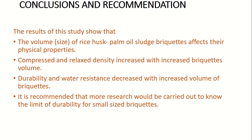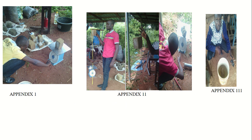The results of the study show that the volume of rice husk and oil sludge briquettes affects their physical properties. Compressed and relaxed density increased with increased briquette volumes, while durability and water resistance decreased with increased volume. We recommend that more research be carried out to determine the durability limits for small-size briquettes. Here we can also see the previous results during the relaxed density and compressed density measurements, the durability test after dropping from a height of 1.5 meters, and the water resistance test.